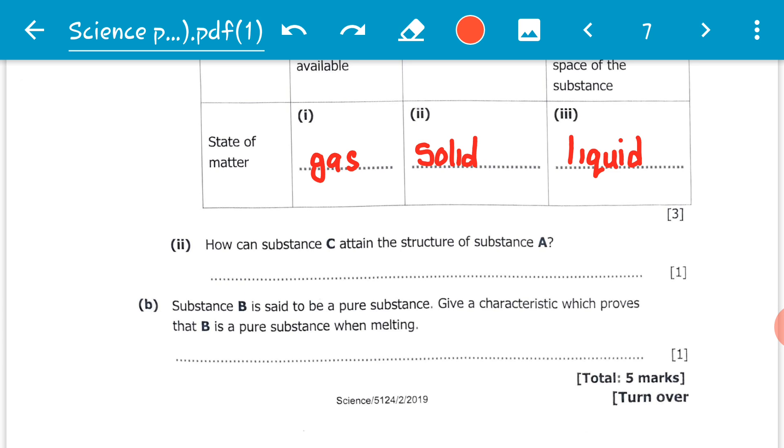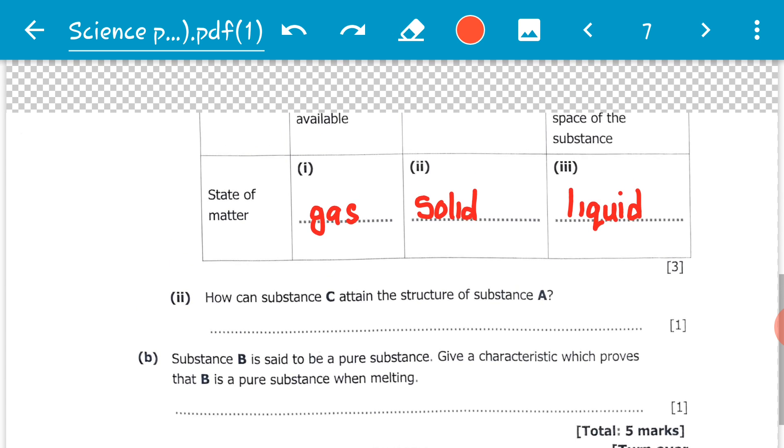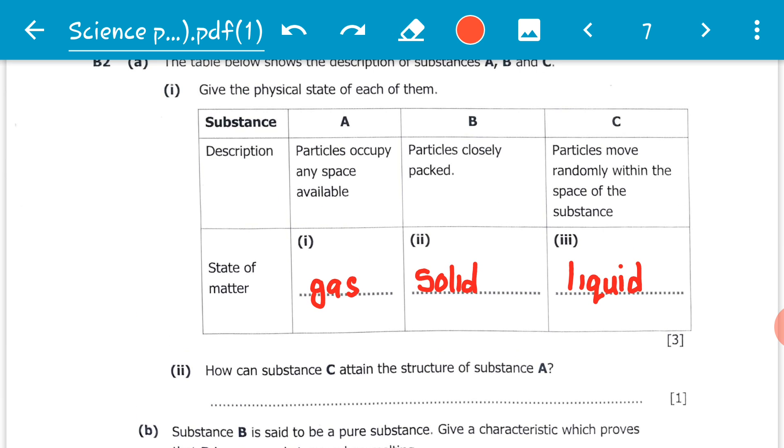How can substance C attain the structure of substance A? Here we are looking at what is supposed to happen to substance C to turn into a physical state that is the same as that of substance A. When we look at the table, substance C is in liquid state, substance A is in gaseous state. This process involves the changing of a liquid to a gas.